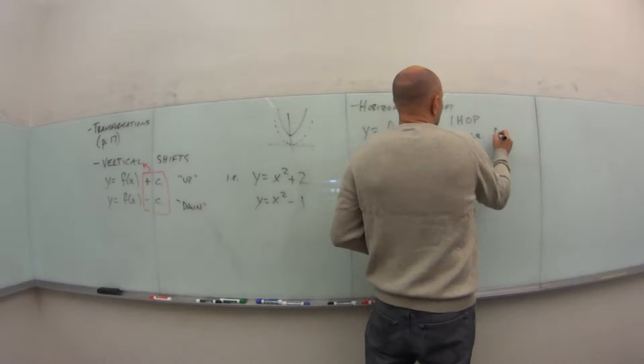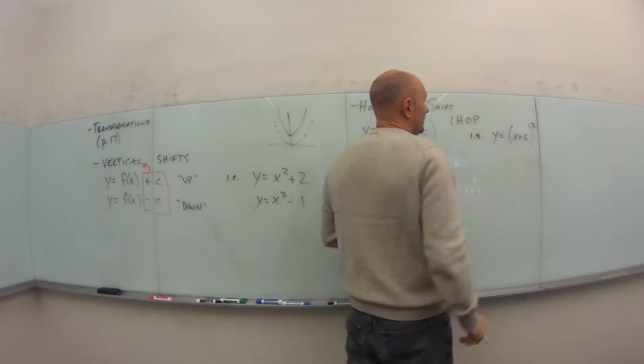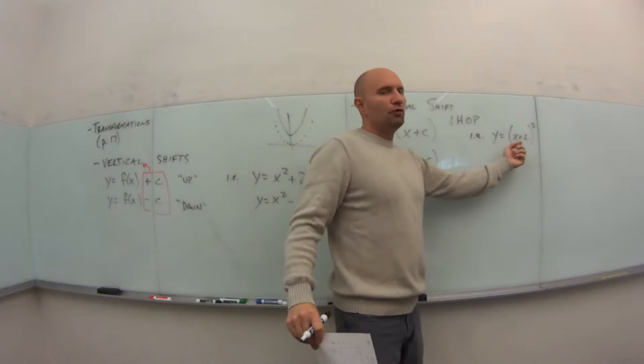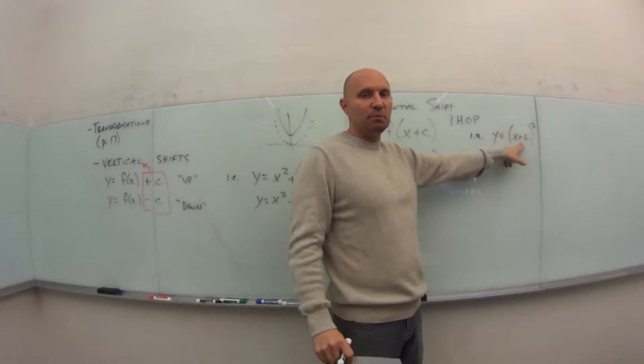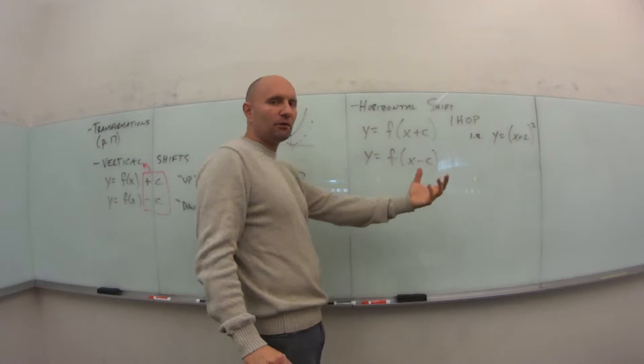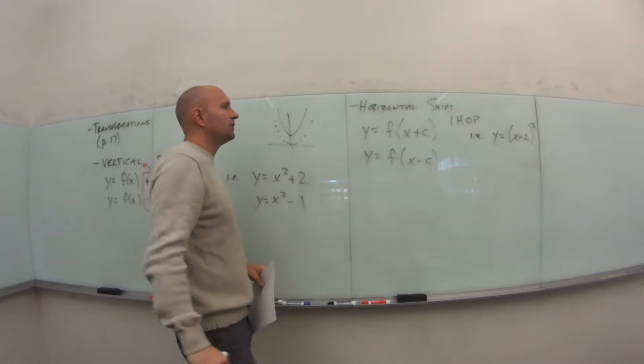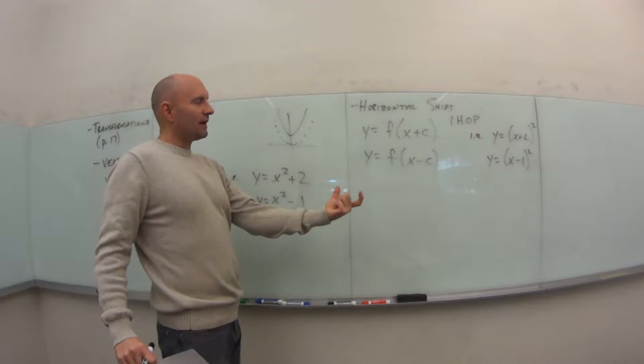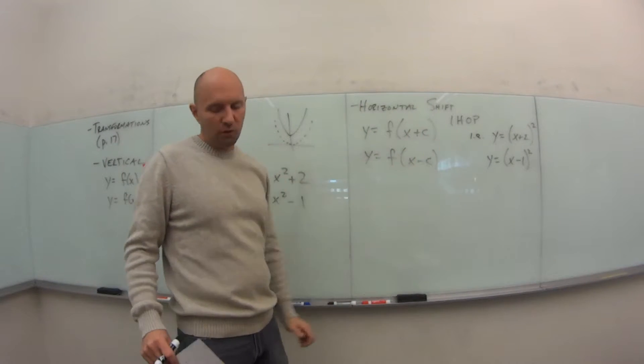So if the value is inside the function, it's indicating a horizontal shift and it's the opposite of what I see. For example, if I have y equals x plus 2 squared, the squared tells me this is still a parabola, but because the 2 is now inside the parentheses, this tells me it's a horizontal shift and it's the opposite of what I see. I see plus 2, which means it's shifting this entire thing to the left 2 units. Still stays with the vertex on the x-axis, just moved it to the left 2 units. Or another possibility, y equals x minus 1 squared. Again, it's inside the parentheses, it's a horizontal shift. I see minus 1, which means the shift is plus 1 over to the right.